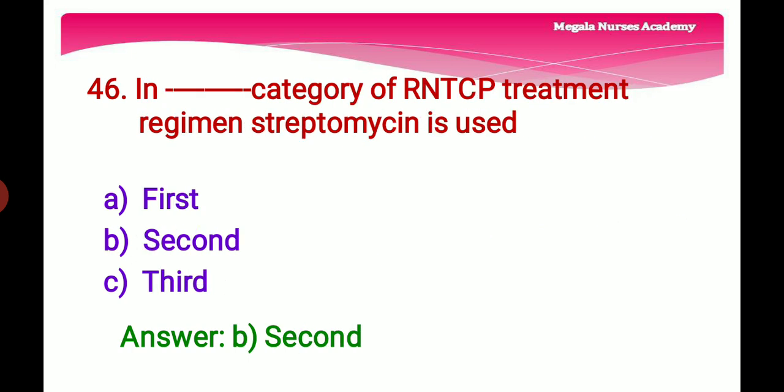Forty-sixth question: In which category of the RNTCP treatment regimen is streptomycin used? Option A: 1st category, Option B: 2nd category, Option C: 3rd category. The right answer is Option B, 2nd category, because streptomycin is an aminoglycoside antibiotic derived from Streptomyces and is used in the treatment of 2nd category TB.